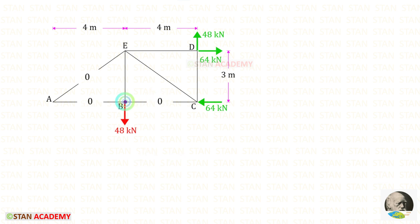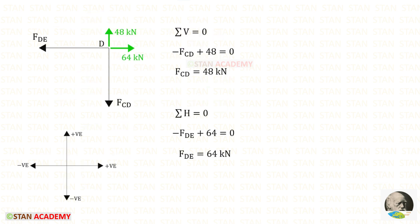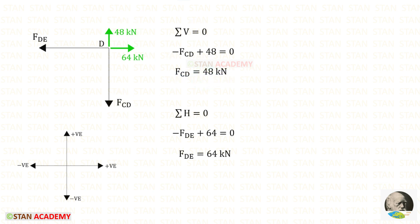Now let us take joint B and find the member force BE. We need not include the zero-force members. Applying sigma V = 0, FBE is acting upwards (positive) and the 48 kN load is acting downwards (negative), so FBE = 48 kN. Then applying sigma H = 0, with the horizontal component acting left (negative) and Hc acting right (positive), FBE gives 64 kN.